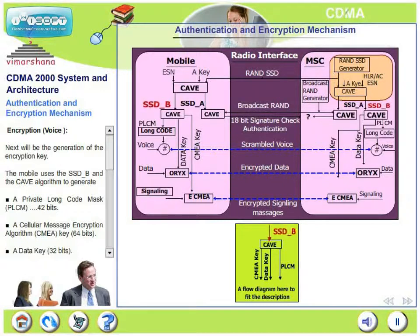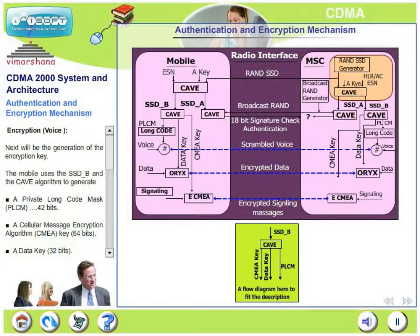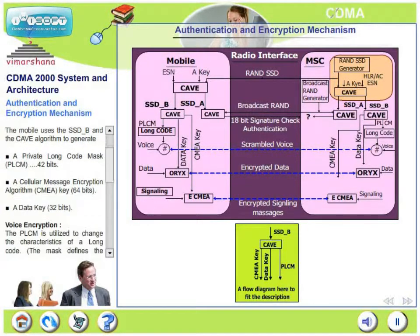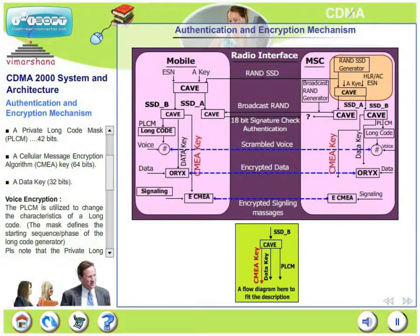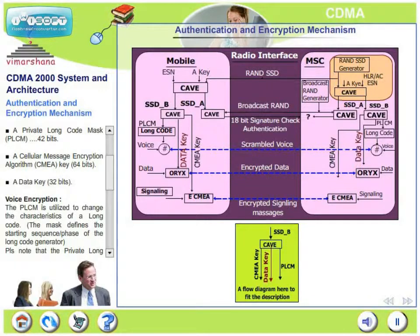The mobile uses the SSD B and the key algorithm to generate three streams: one is the private long code mask, a cellular message encryption algorithm called CMEA — which has 64 bits — and a data key with 32 bits.